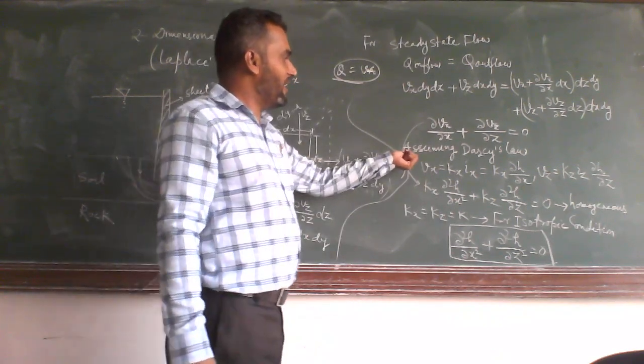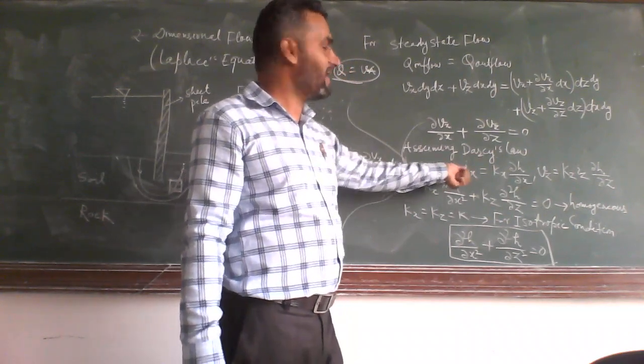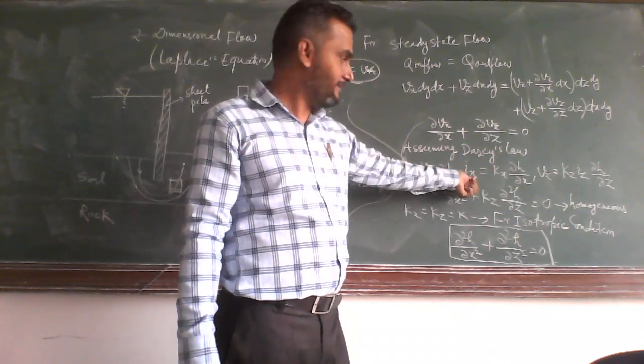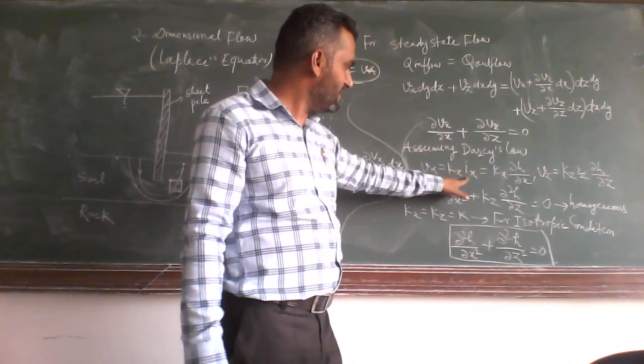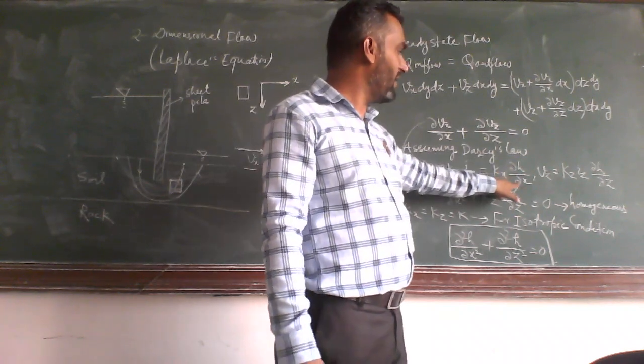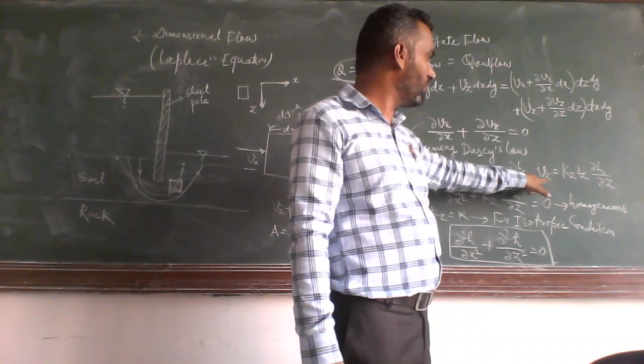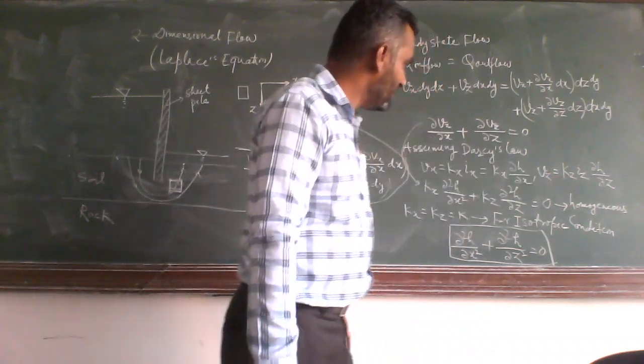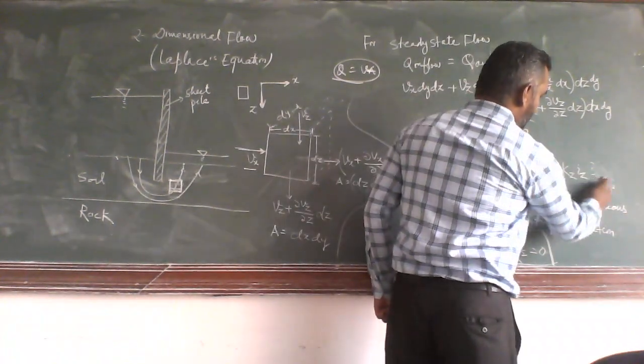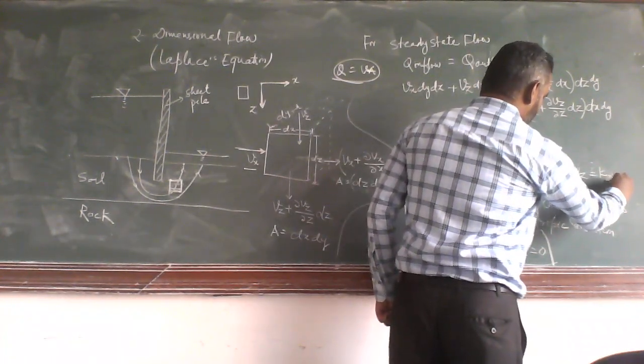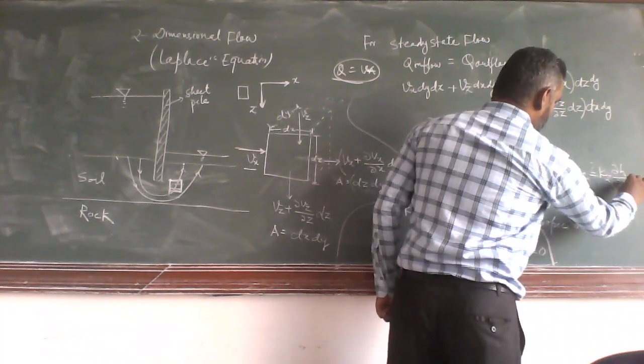If we assume that Darcy's law is valid, it means vx will be kx into ix along x axis. And this ix will be delta h by delta x. Similarly, in case of z direction, vz equals kz into iz, which equals kz into delta h by delta z.